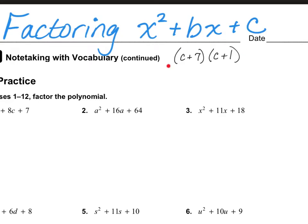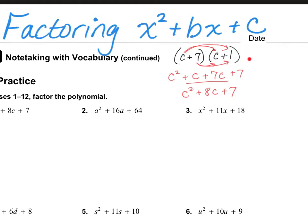As you remember from the last section, if I gave you a problem like this and asked you to multiply it out, you could use the distributive property — multiply c times c to get c squared, then c times 1 is 1c, then 7 times c is 7c, and 7 times 1 is 7. Then you combine the middle terms, so you have c squared plus 8c plus 7. What we're doing for this lesson is working backwards from this to find the factored form. You are given the non-factored form and need to find the factored form.